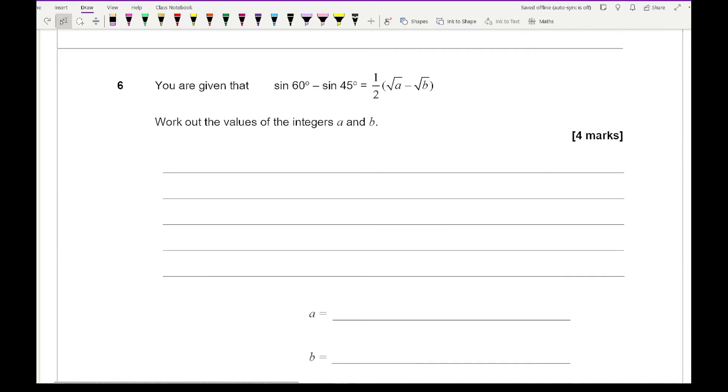For question 6 it says you're given that sine 60 minus sine 45 equals a half root a minus root b and the question is asking us to work out the values of the integers of a and b so our answers for a and b need to be whole numbers. So for this what I'm going to do is I'm going to take one side so let's take this side here. Now in terms of sine 60 and sine 45 we need to know what the exact values of those are. So here sine 60 is root 3 over 2 and sine 30 is 1 over root 2. So what I'm going to do is I'm just going to substitute those values in so in terms of the left hand side what I end up with is root 3 over 2 minus 1 over root 2.